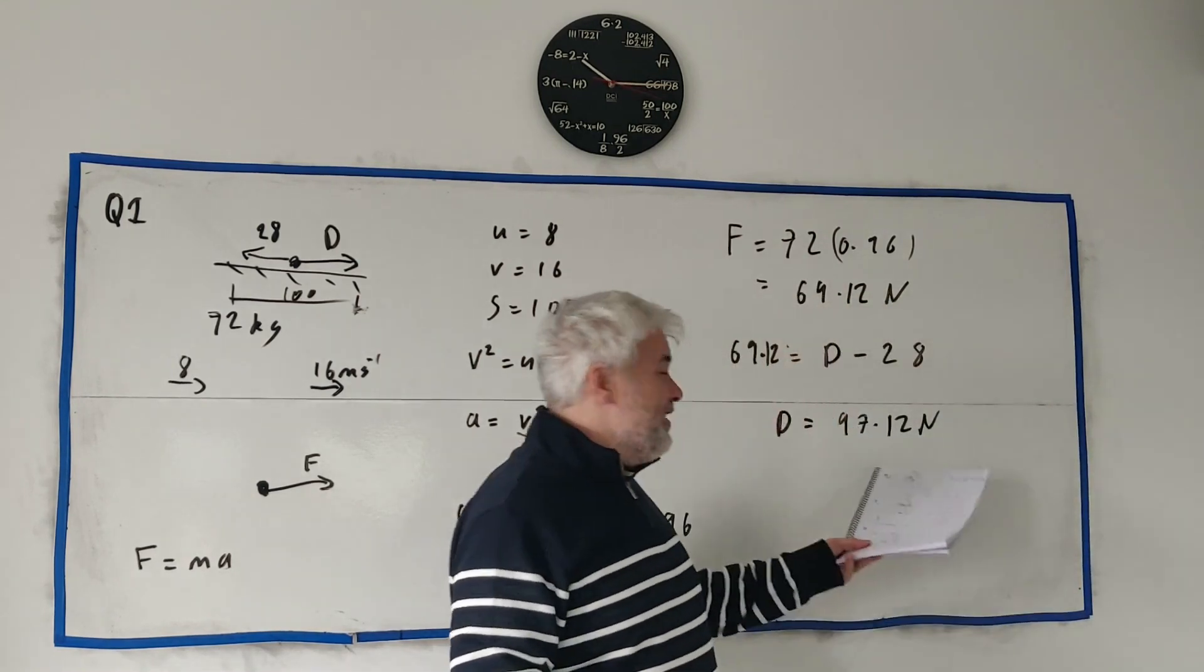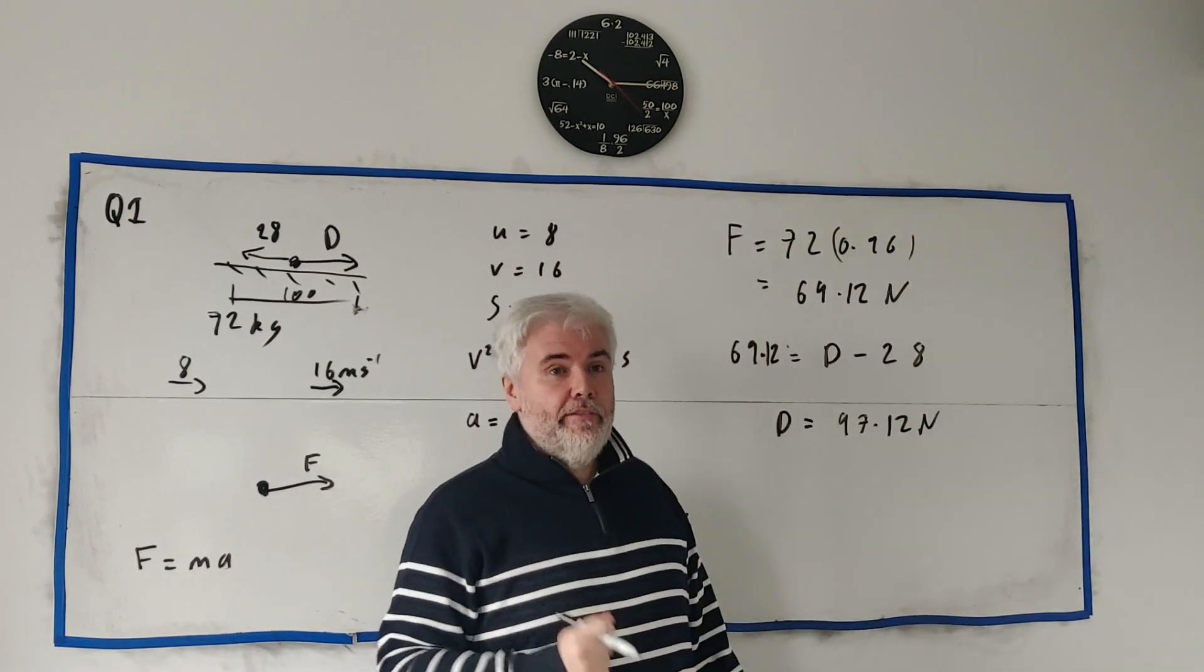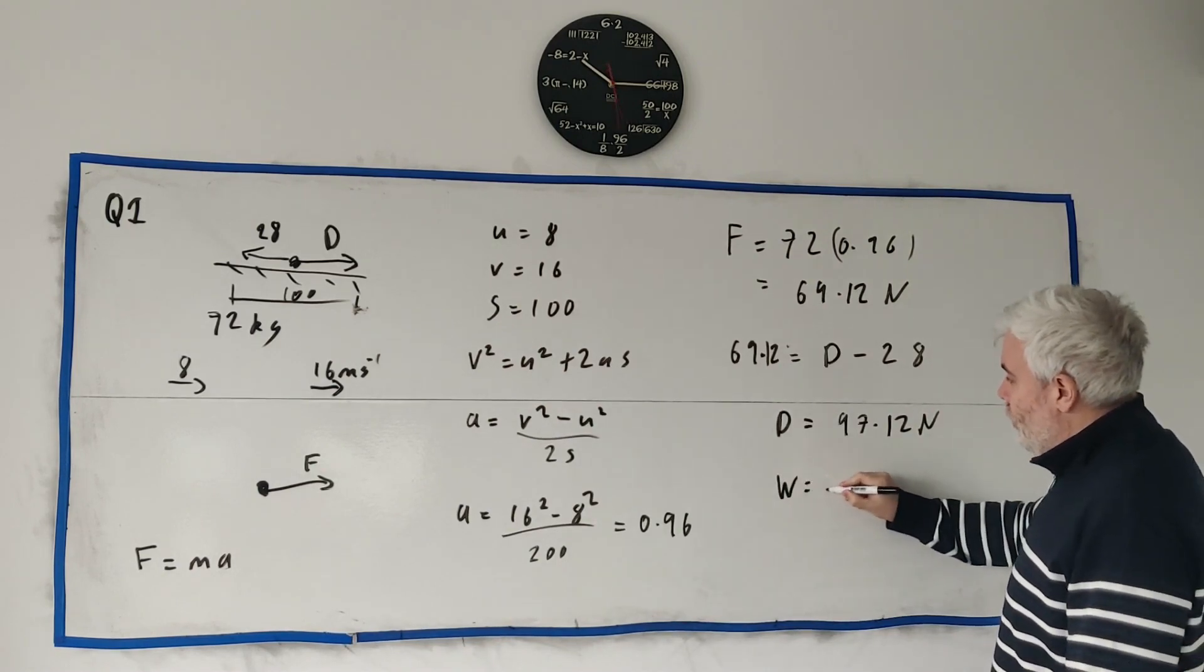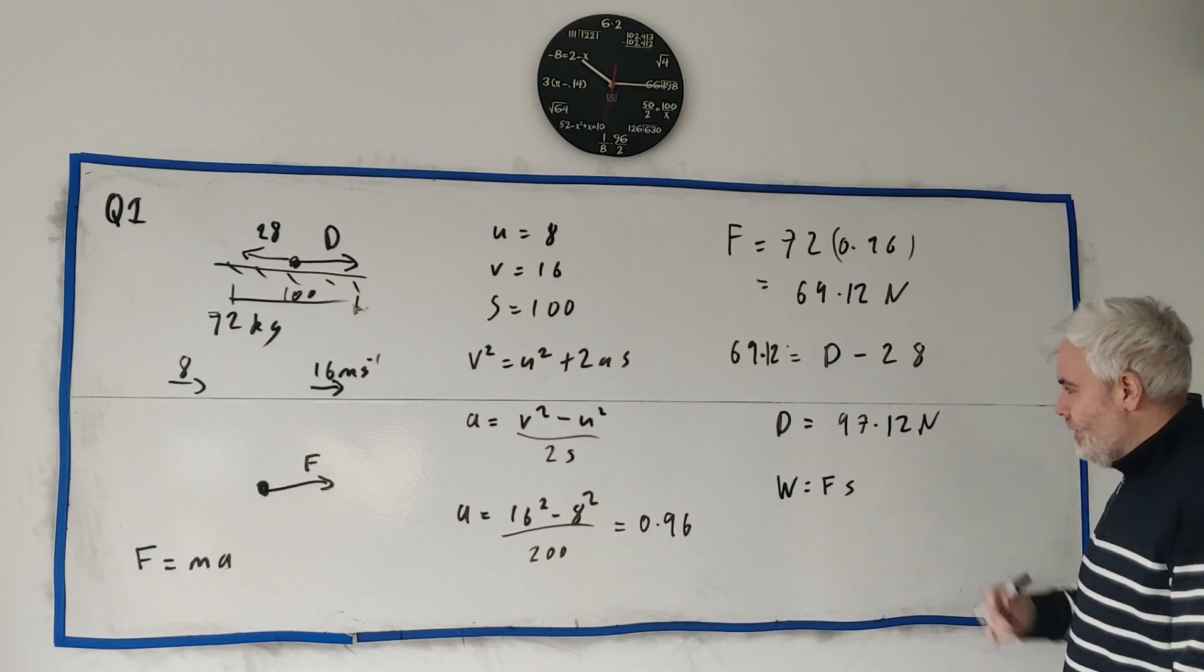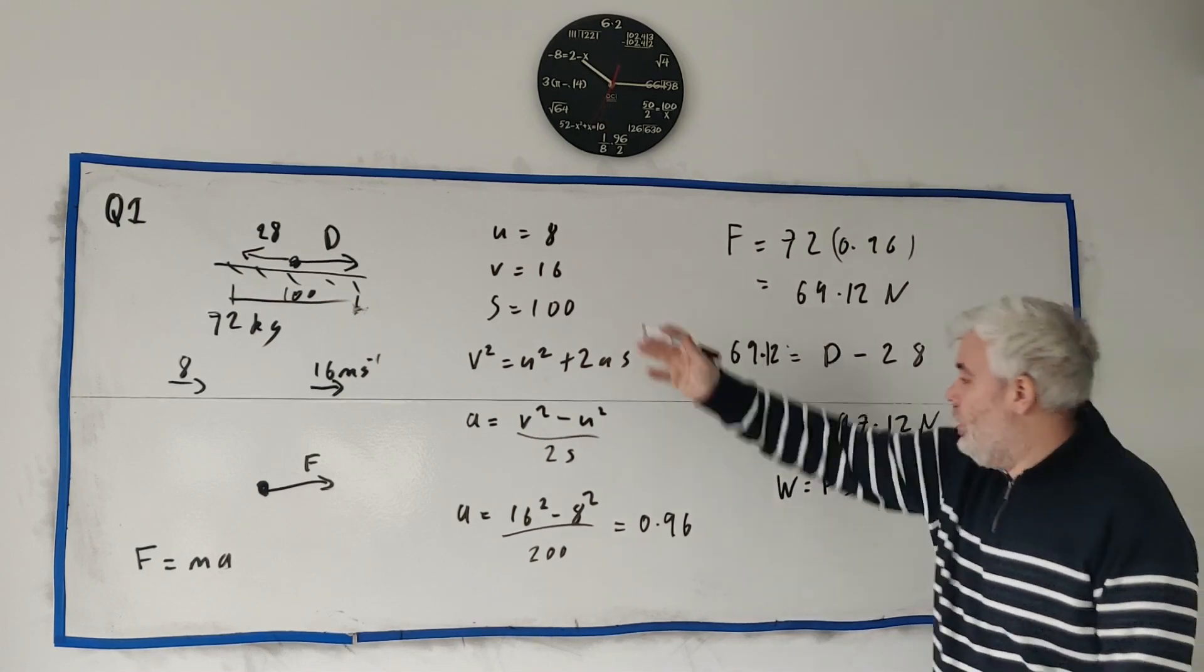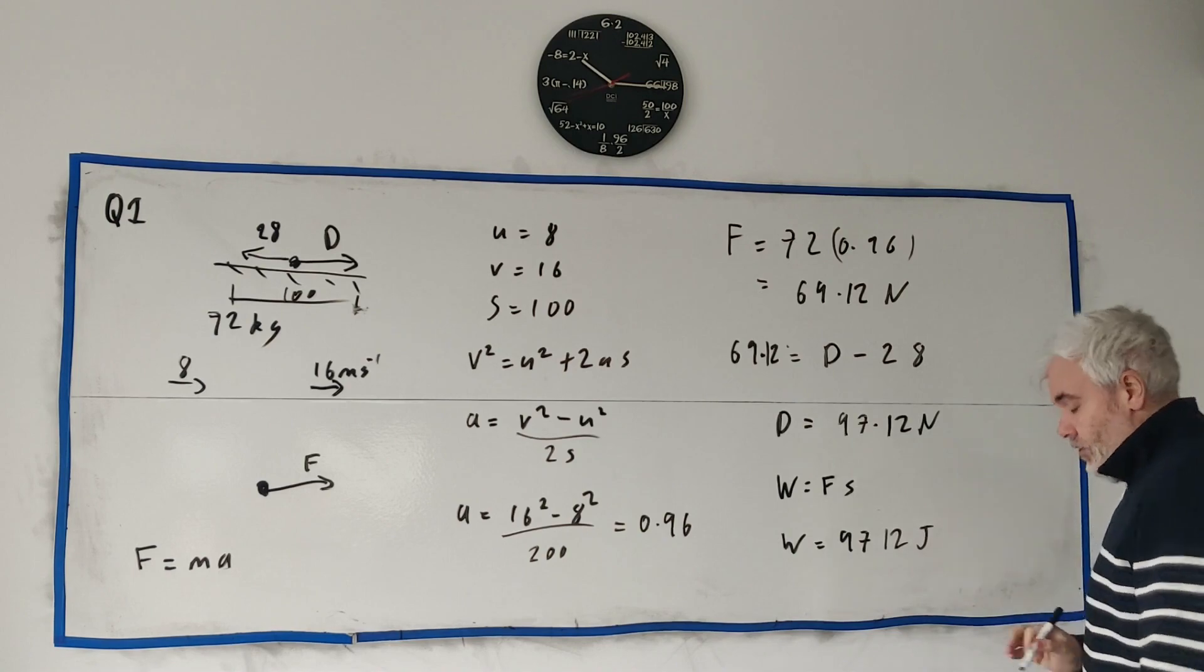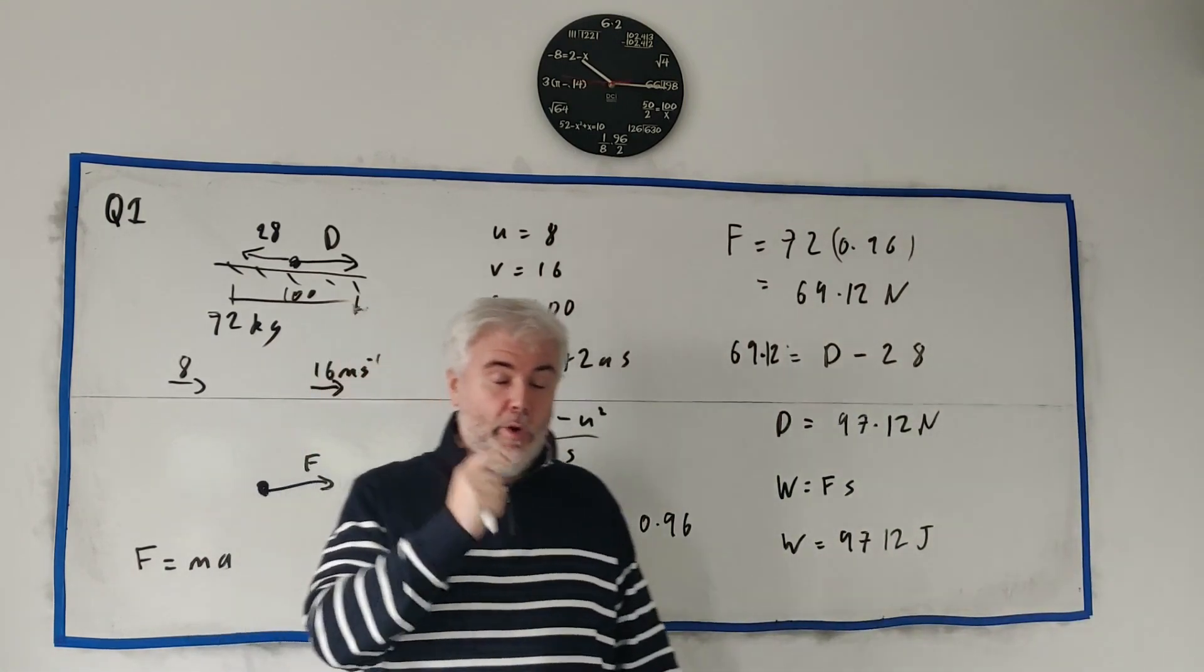A lot of students will leave that as their final answer. You will lose a mark. They didn't ask for the force driving the cyclist forward. They asked for the total work done. And work, work is equal to force times over distance, times distance. So this force multiplied by 100. So the total work done is equal 9712 joules. And that's the final answer for question one.